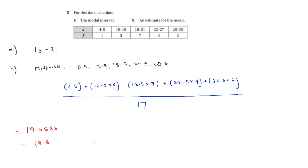This is only an estimate because we've had to take midpoints — in reality, for example, the first value could have just been 4, but we used 6.5. So this is just an estimate, as the question asks.